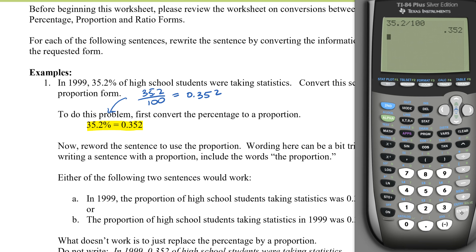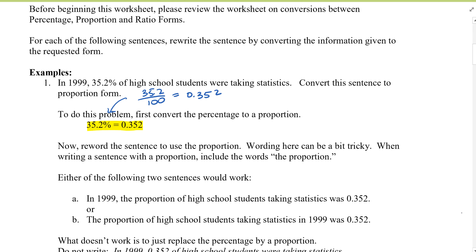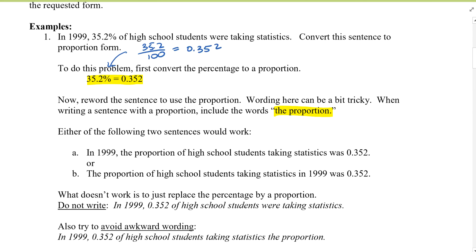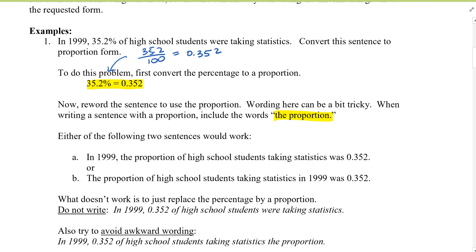Now we word a sentence using the proportion. Wording here can be a little tricky. When writing a sentence in proportion form, always include the word 'proportion.' That was one of the most common mistakes on the handout. There are two ways to rewrite the sentence: 'In 1999, the proportion of high school students taking statistics was 0.352,' or 'The proportion of high school students taking statistics in 1999 was 0.352.'